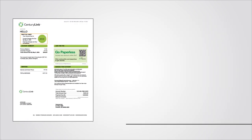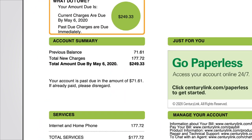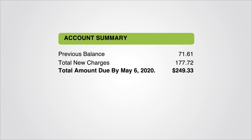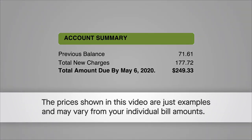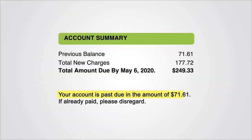On the first page of the bill, you will find your account summary, which is the most commonly viewed area of the bill. Here, you'll find the answer to questions like, When is my bill due? and How much do I owe? The account summary also includes your previous balance and any recent payments CenturyLink has received. If you have a past-due amount, you'll find that here.